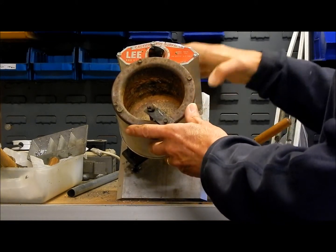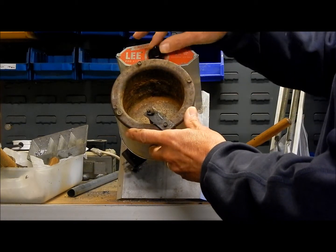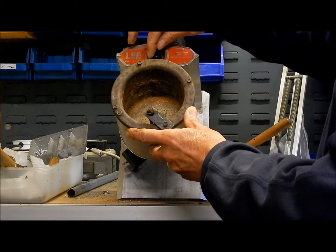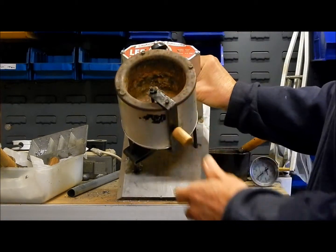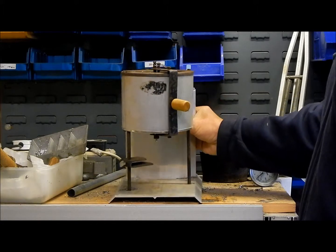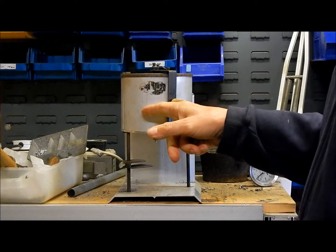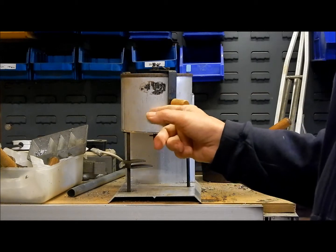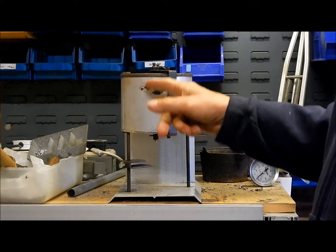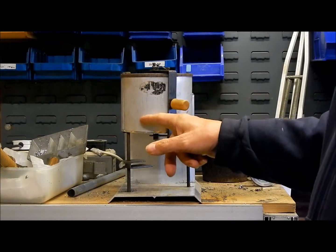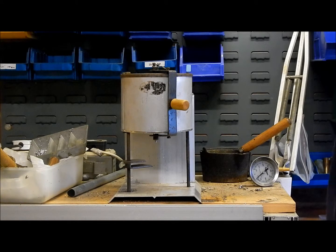The main problem I find with it is the temperature control. The temperature is controlled by this knob here, graduated zero to ten or low to high. But what I find is that the temperature of the lead increases as the level of the lead decreases in the pot. So once the level begins to drop, temperature goes up and you find yourself casting at maybe around a thousand degrees.